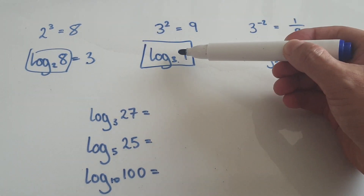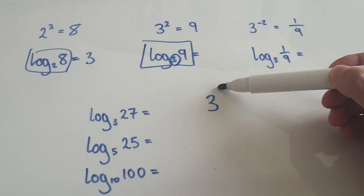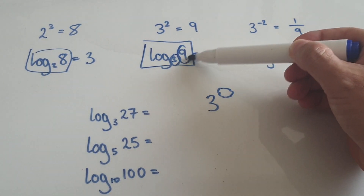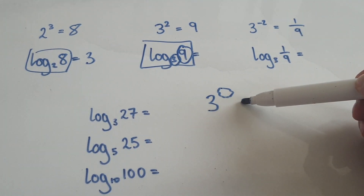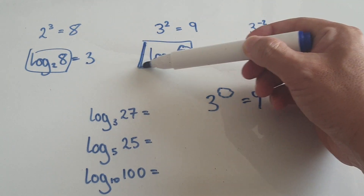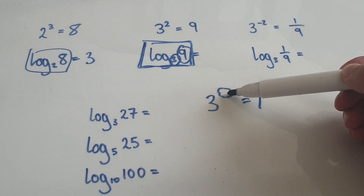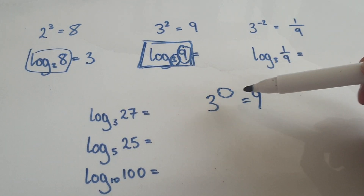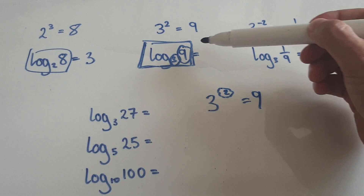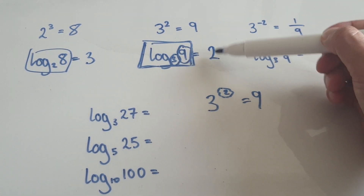You're right to zoom into the base. 3 to the power of what would give me this number here? The whole log block is talking about this index, so it turns out to be the number 2. So this whole block here is the number 2.